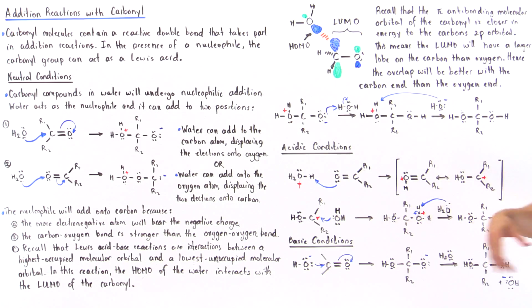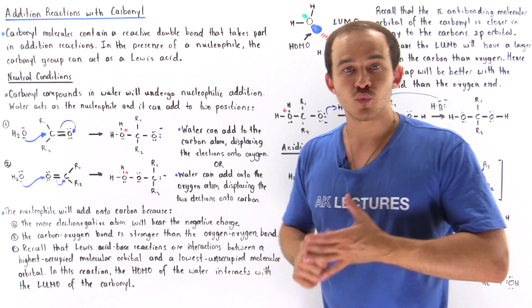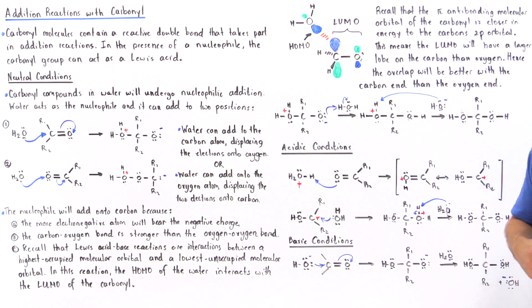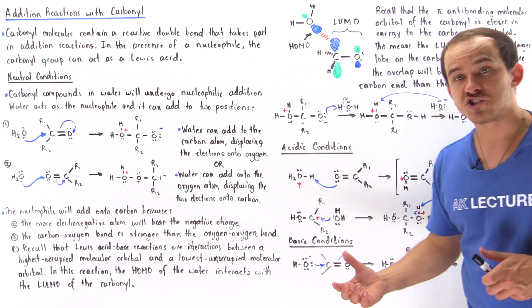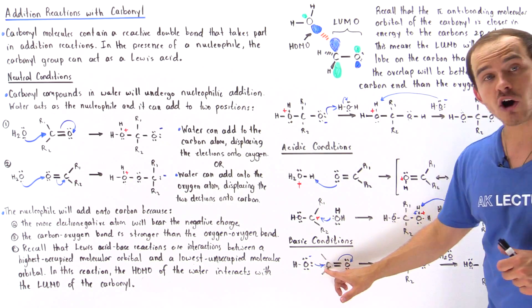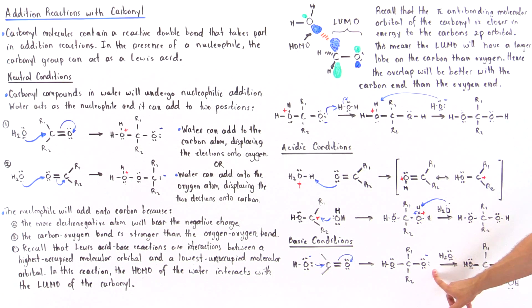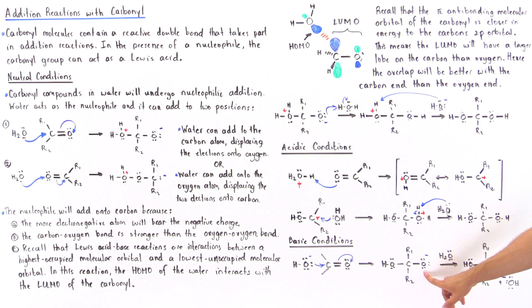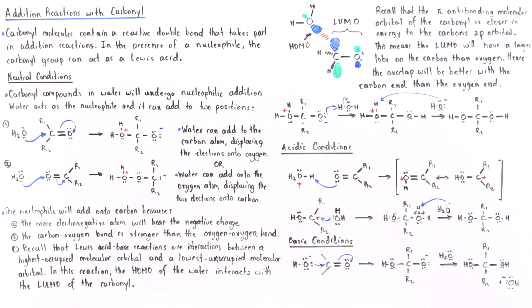Under basic conditions, there is plenty of hydroxide. The hydroxide acts as the nucleophile — the Lewis base — bonding to the carbon in the carbonyl and displacing the two electrons onto the oxygen. In the second step, water protonates this oxygen, regenerating the hydroxide that was used in the first step and forming our hydrate product.